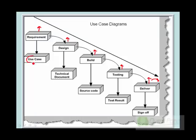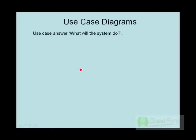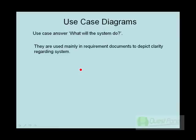Use case diagrams are used in the requirement phase to collect requirements from the customer. These use cases are then fed into the design phase to define the technical road map. Use case diagrams answer the question: what will the system do? For example, a system might print invoices, update invoices, or add new invoices. Use cases can be read by business users and are used in requirement documents to depict clarity regarding the system.